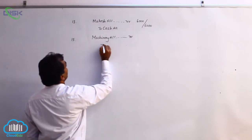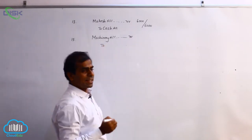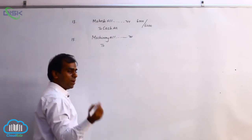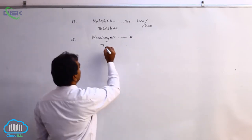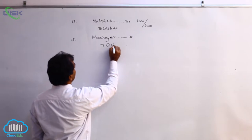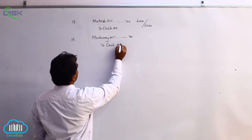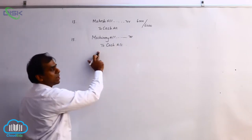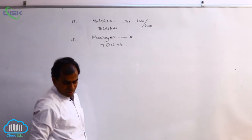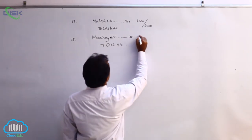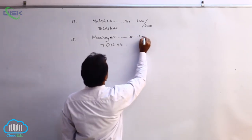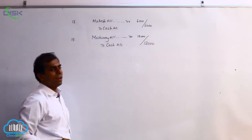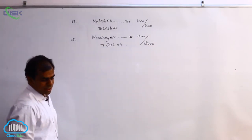Cash was paid for the machinery, and cash is again a real account. Cash is going out, so we credit cash based on the rule of real account. The journal entry is machinery account debit to cash, the amount being 12,000, and the narration is being machinery purchased for cash.